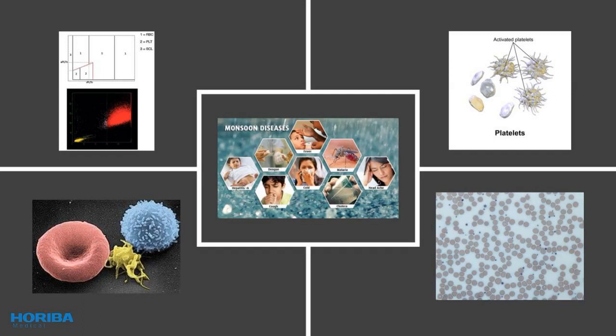Platelets have always been an important parameter, but monsoon makes it more imperative as this season is followed by diseases in which platelet count not only becomes a diagnostic factor but also a prognostic factor. New age analyzers are leading the way, and innovations like optical platelet counting are giving hematology a whole new dimension. Today, in many centers, manual counting has become obsolete. Parameters like PLCR and PLCC can guide us for transfusion in dengue patients.